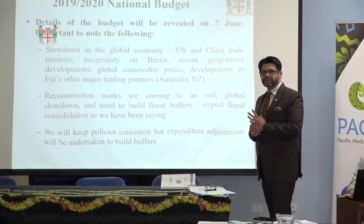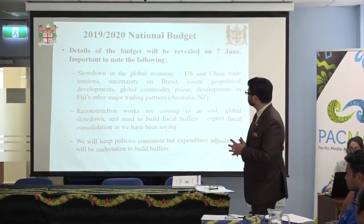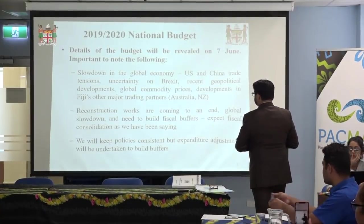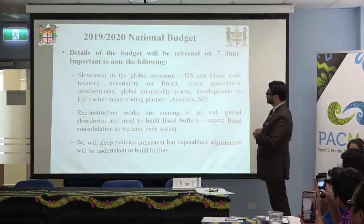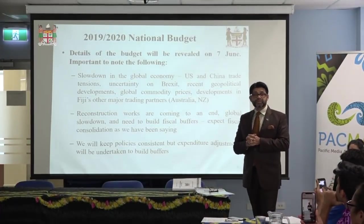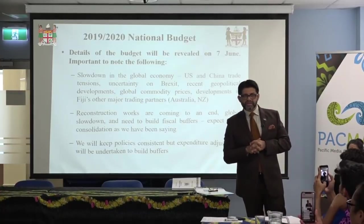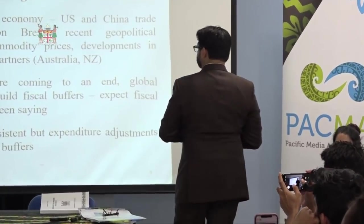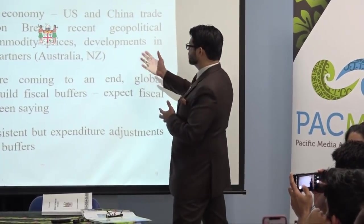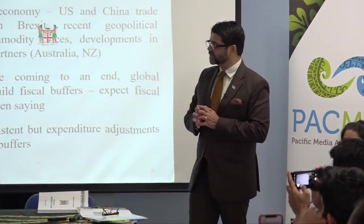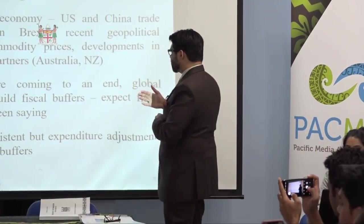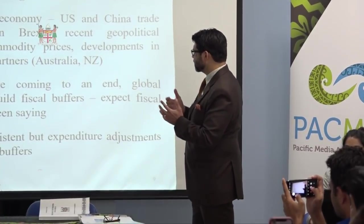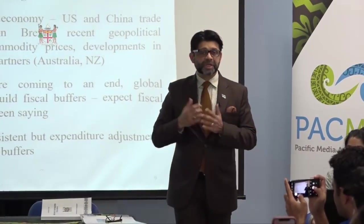A little bit of a tip on the 2019-2020 budget: there is obviously a slowdown in the global economy — US-China trade uncertainty, Brexit too. We've already signed an MOU with the UK in respect of our sugar going there. Recent geopolitical developments, global commodity prices, developments with major trading partners like Australia and New Zealand. Reconstruction works from Cyclone Winston are coming to an end — expect fiscal consolidation and a need to build fiscal buffers.